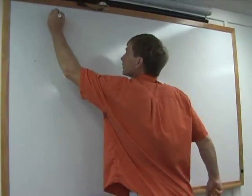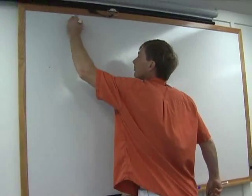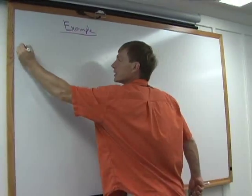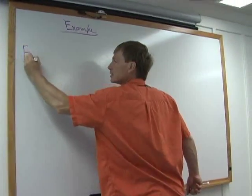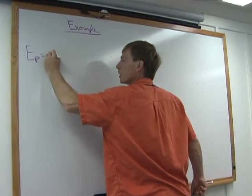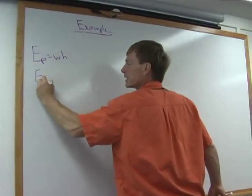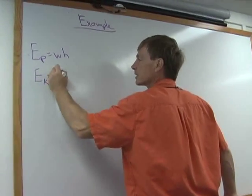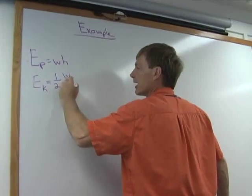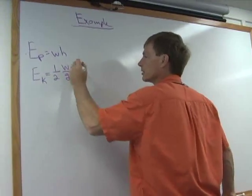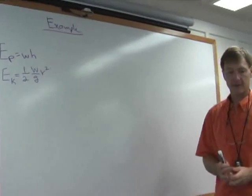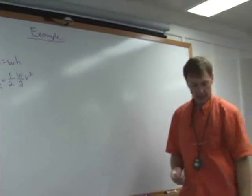I've got a ball. So an example — I'll put in the equations. In English units, you usually use weight times height for potential energy in a gravitational field. And the kinetic energy is one-half weight divided by gravity times the velocity squared. So I'm going to take a ball and bounce it.